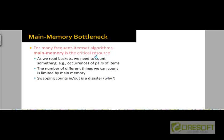Even though main memory is not a bottleneck as far as the time complexity of the algorithm is concerned, we still want the main memory to be large enough that we can store and keep track of the count of how many times individual items, pairs of items, or triples of items have appeared so far in the file of transactions.